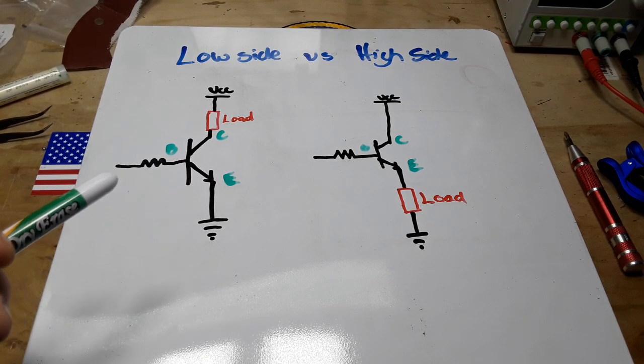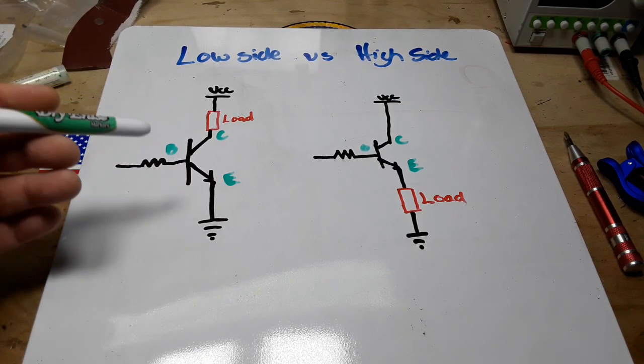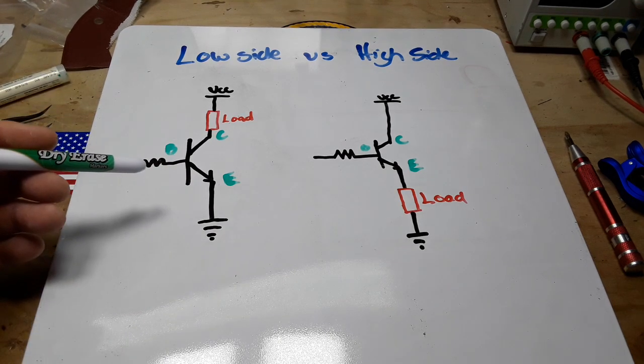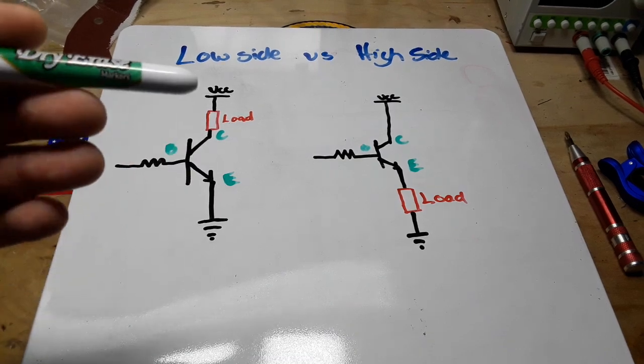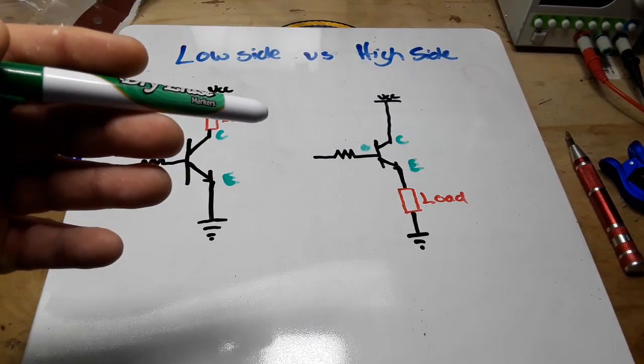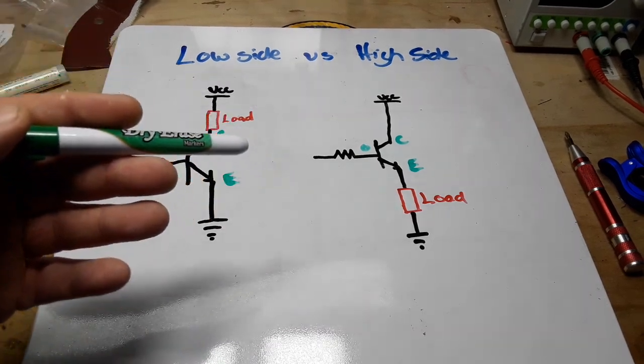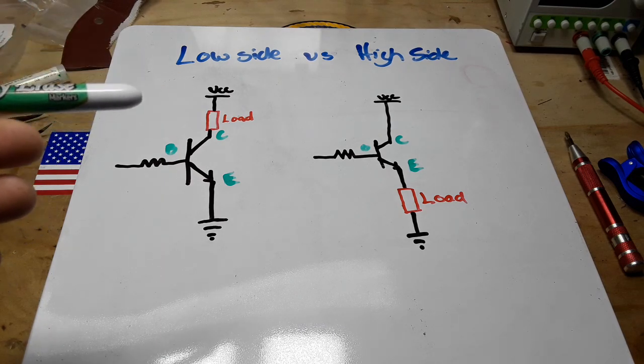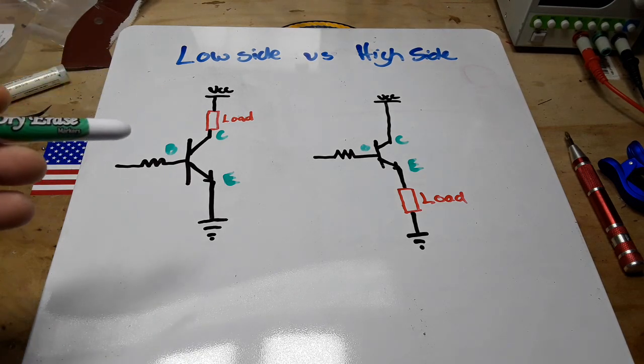Now I'm sure most of you have been taught to use the low side configuration of always switching the ground on and off, but that is not always the best case scenario for either type, either a BJT or a MOSFET. It really depends on what you want the circuit to do.